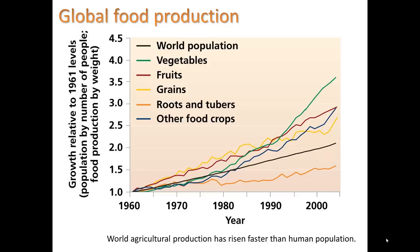Let's take a look at this graph of global food production starting in 1960. When we look at all these different varieties of foods — vegetables, fruits, grains, roots and tubers like potatoes, and other food crops — they have all increased significantly since 1960. In 2000, these values are up around 2.5, meaning we're producing 2.5 times more yield every year globally than we were in 1960. And you can see how this also traces the rise in population.